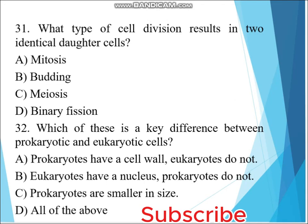What type of cell division results in two identical daughter cells? A. Mitosis, B. Budding, C. Meiosis, D. Binary Fission. The answer must be mitosis.